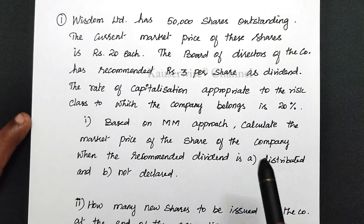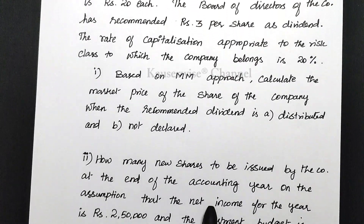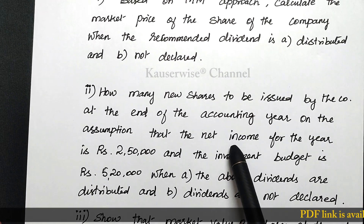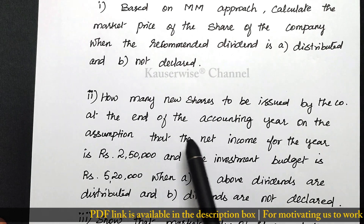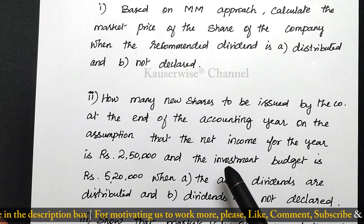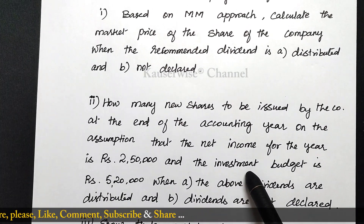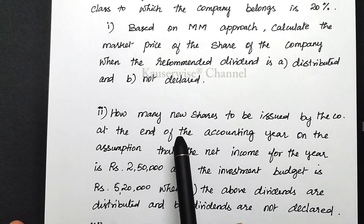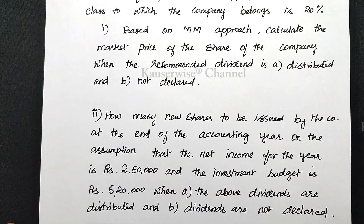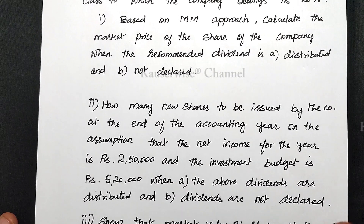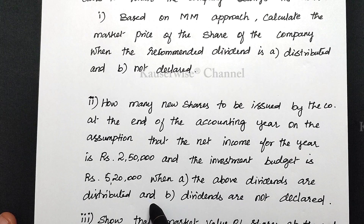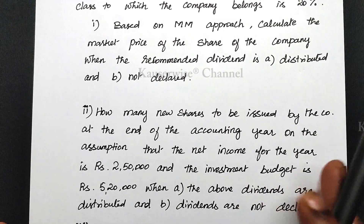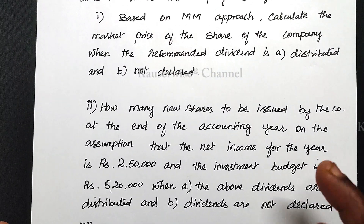Now let us see the second calculation. They are asking how many new shares are to be issued by the company at the end of the accounting year, on the assumption that the net income for the year is rupees 2,50,000 and the investment budget is rupees 5,20,000. We need to find how many shares are to be issued both when dividends are distributed and when they are not declared. Let us first understand the procedure and formula.